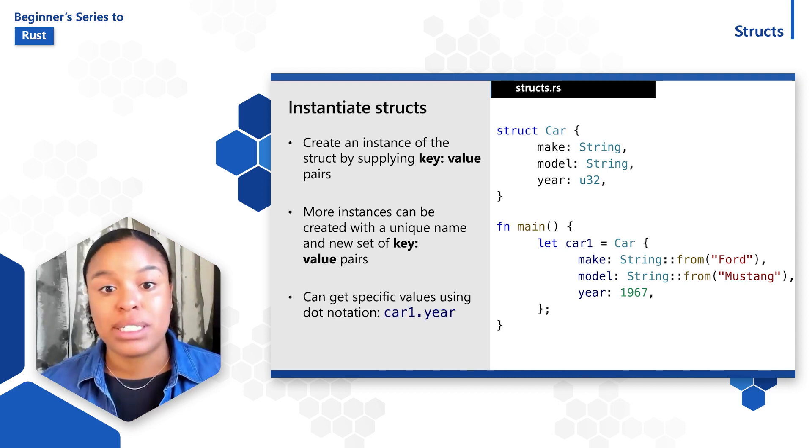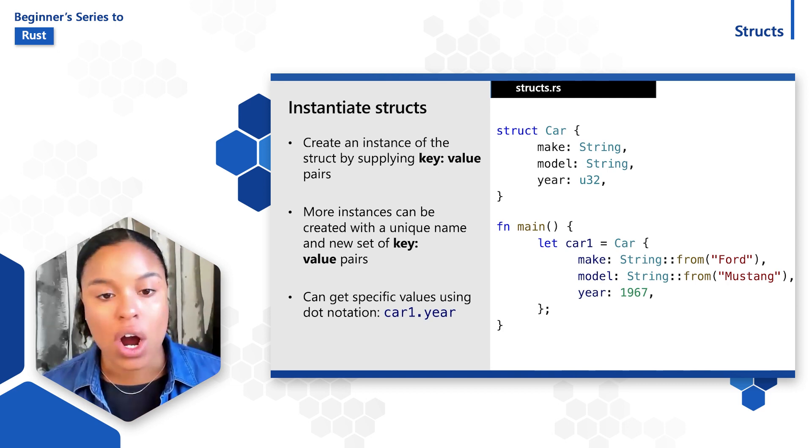Next, we would be able to get specific values from a struct by using the dot notation. For example, if I wanted to know the year of car1, I can say car1.year and receive the value of 1967 back. So that should give you a high-level overview of how structs are used.